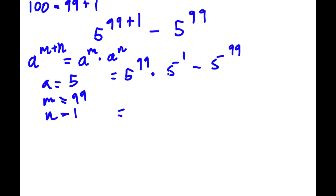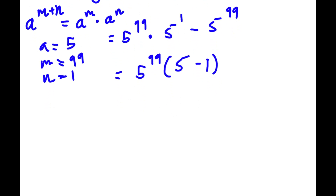Now I'm simply going to factor out 5 to the power of 99 from this. So if I factor out 5 to the power of 99, I get 5 to the power of 99 times — 5 to the power of 99 times 5 to the power of 1 divided by 5 to the power of 99 is simply 5. And minus 5 to the power of 99 divided by 5 to the power of 99 is 1. So we have 5 to the power of 99 times (5 minus 1). Simplifying, 5 minus 1 is 4, so we have 5 to the power of 99 times 4. And this is our answer.